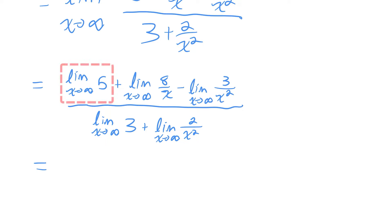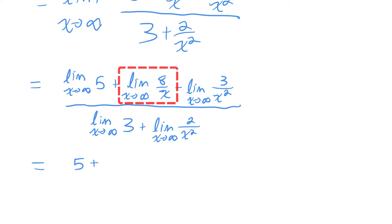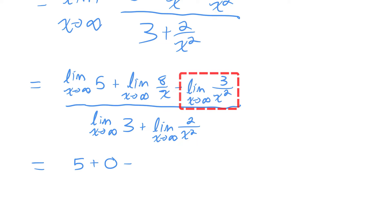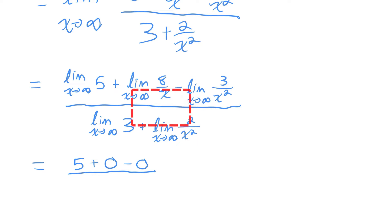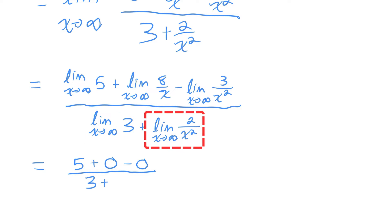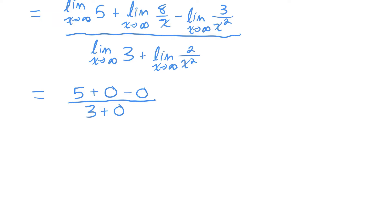In the numerator, as x approaches infinity, 5 is still 5 — it's a constant. The next term, 8 over x, as x goes to infinity gives 8 over an infinitely large number, which approaches 0. Similarly, 3 over x squared also approaches 0. In the denominator, the limit of 3 is just 3, and 2 over x squared approaches 0. So I'm left with just 5 thirds — I found my limit.